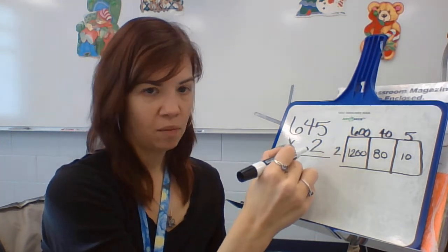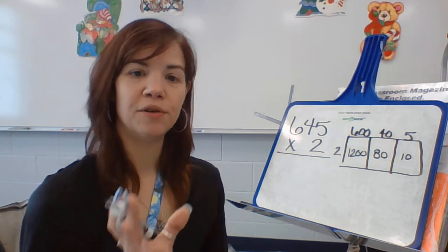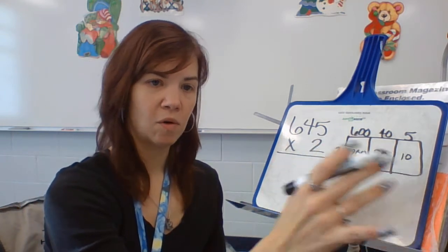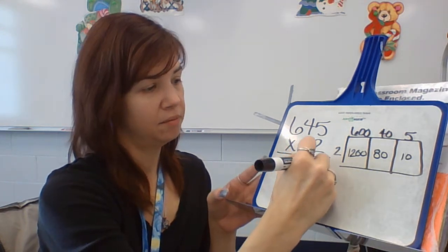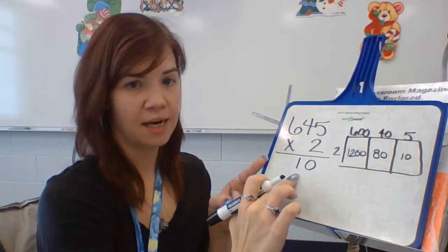So we always start in our ones place, doesn't matter whether you're using the standard algorithm or we're coming into this. 5 times 2, there's 10. So this number has now appeared over here.